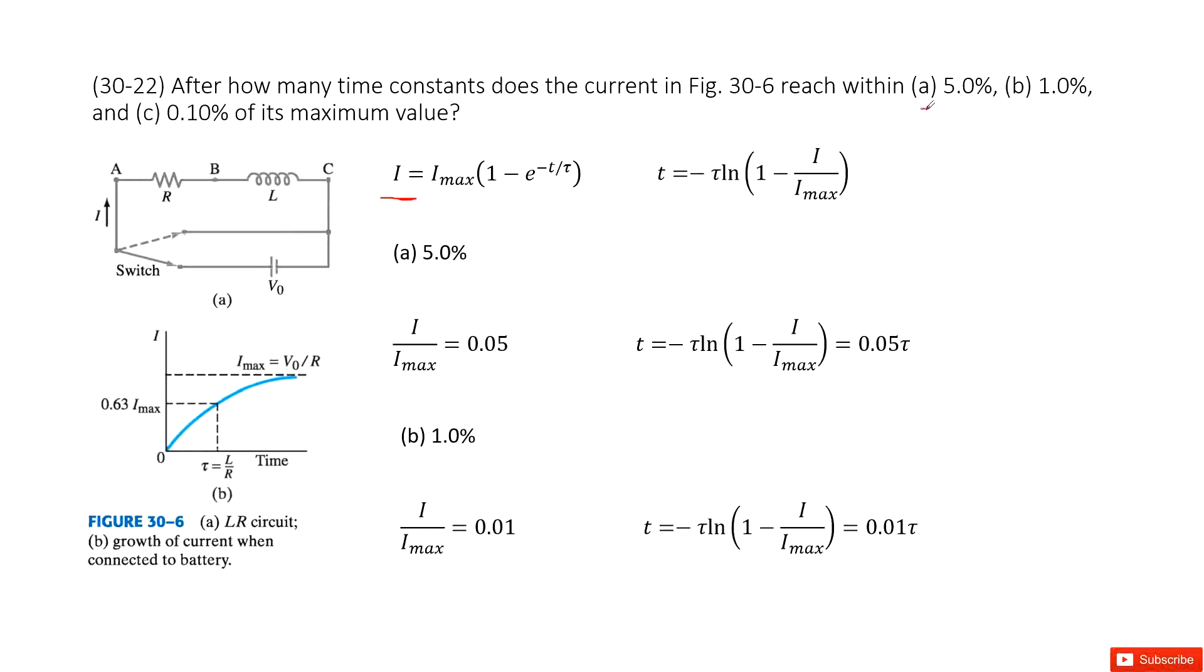So first one, for the 5%, that is the current I over Imax is 0.05. So this is 5%, we can say this is 100, so 5% is around there.